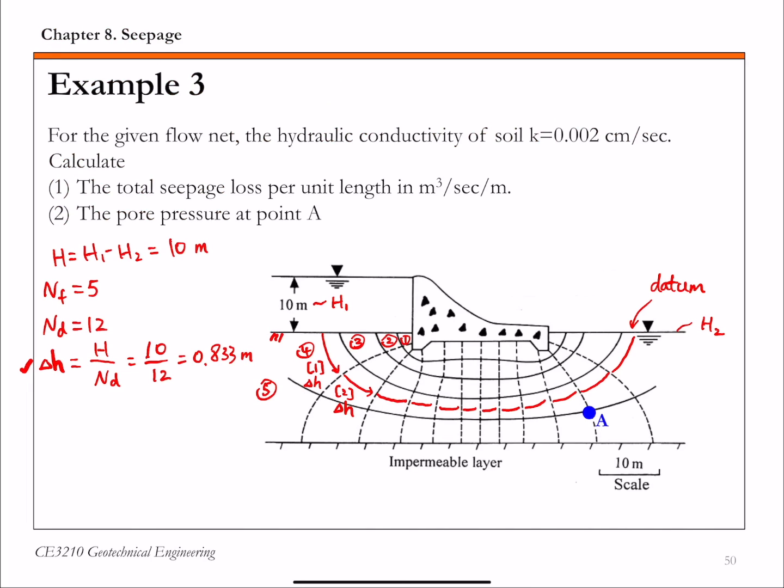So let's look at this graph here. So when water travels from upstream to point A, so let's count how many potential drops water experiences. So that's 1, 2, 3, 4, 5, 6,